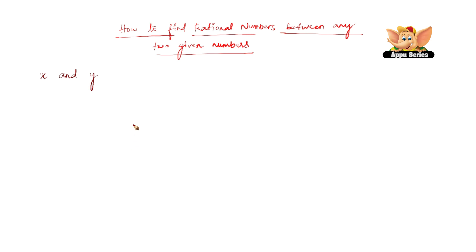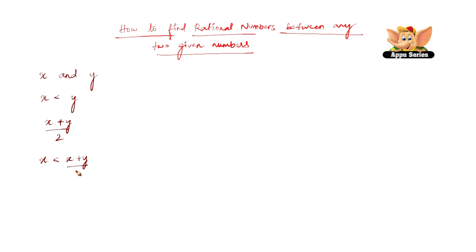So now if we have to find a rational number between x and y, such that x is less than y, then x plus y by 2 would be one of many rational numbers present between x and y. We can write that x plus y by 2 is greater than x, and at the same time it is also less than y. This clearly shows that x plus y by 2 is exactly in between x and y, so it is a rational number between x and y.